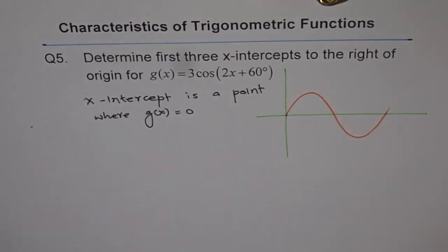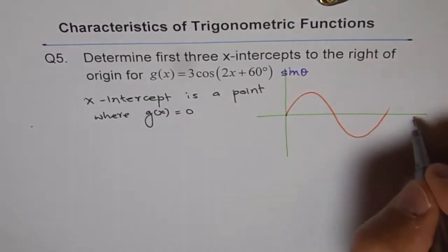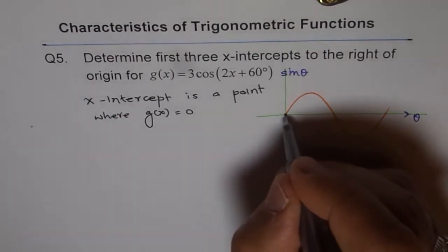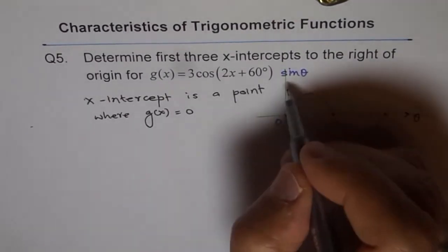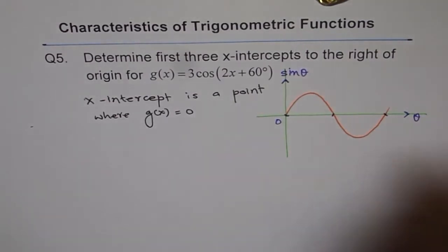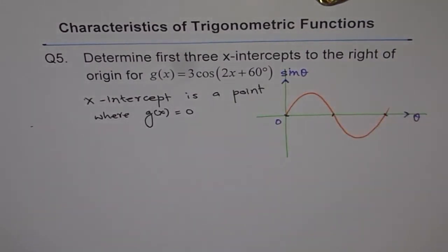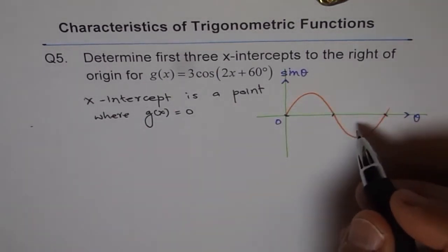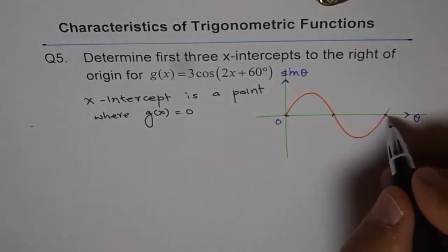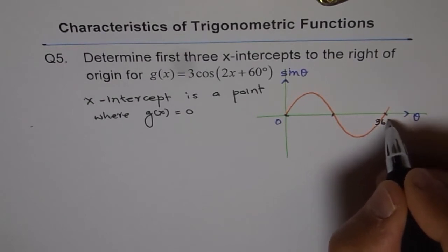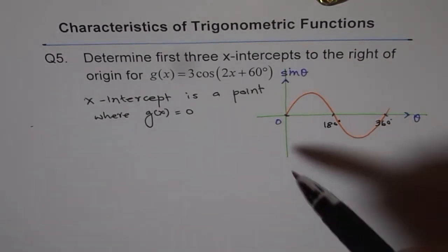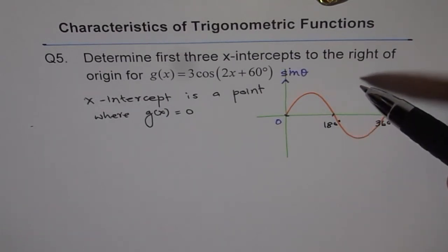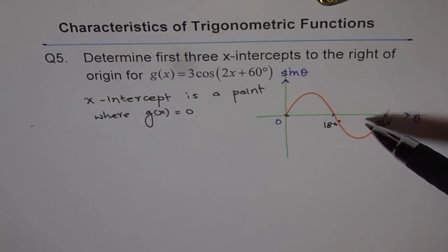That's our wave — in general, this is just sine theta. These points are the x-intercepts, and at these points the value of the function is 0, because the value of the function is along the y-axis. For a normal sine theta wave, the x-intercepts normally occur at 0°, 180°, and 360°. So we do get 3 x-intercepts in one wave. If you transform up and down, you can reduce the number of x-intercepts and change their position.